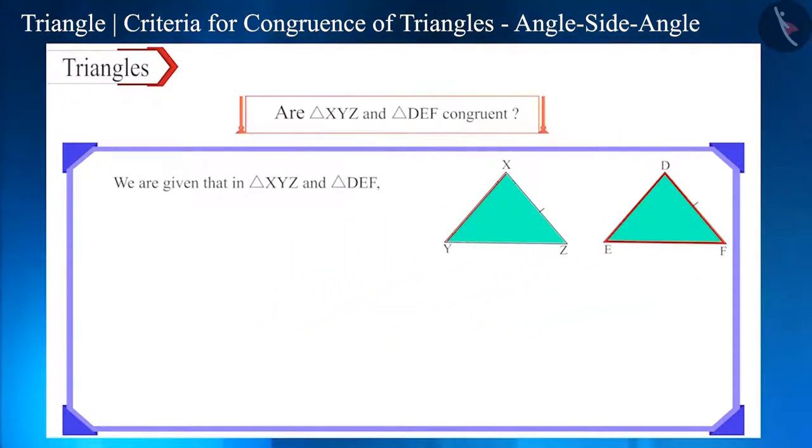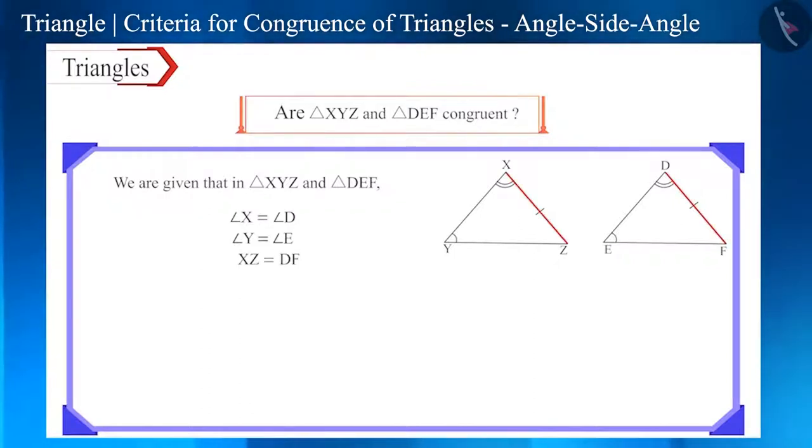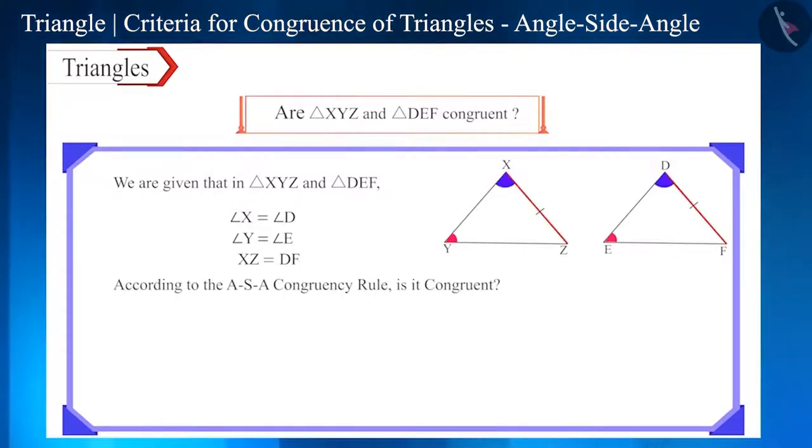In both these triangles, the angles angle X and angle D are equal. Angle Y and angle E are equal, and side DF and side XZ are equal. So, are these triangles congruent according to the ASA angle-side-angle congruence rule of triangles?